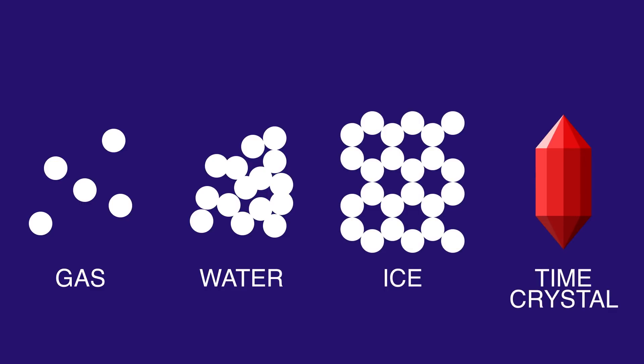Water, gas, and ice are always in thermal equilibrium, which means that their atoms have settled into the state with the lowest energy, and their properties don't change with time.